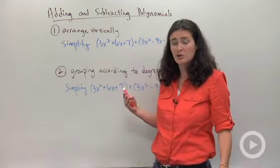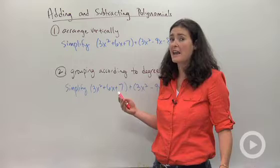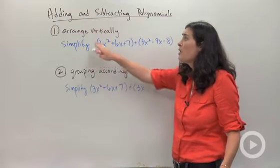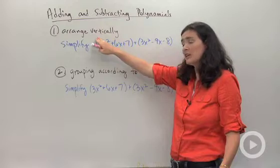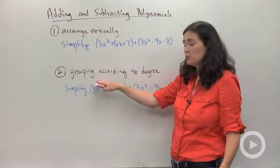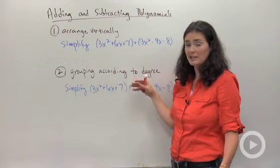First, let's look at some different ways you can organize your work for adding and subtracting polynomials. One way some students like to do is to arrange their work vertically. Another way is to group each term according to its degree.